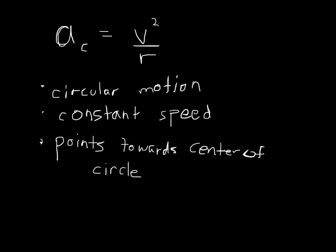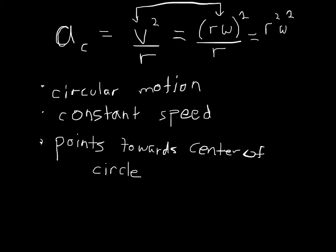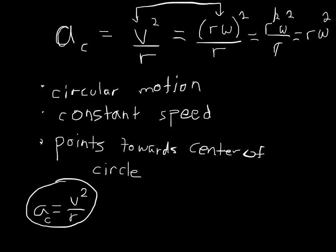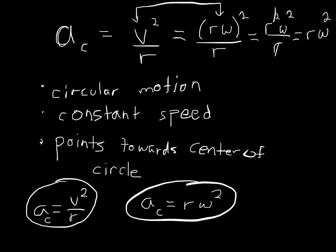We can write centripetal acceleration a slightly different way using angular quantities. Since V = r·ω, we substitute: AC = (r·ω)²/r = r²ω²/r = r·ω². So we have two equations: AC = V²/R for linear quantities, or AC = R·ω² for angular quantities. Either one will work.